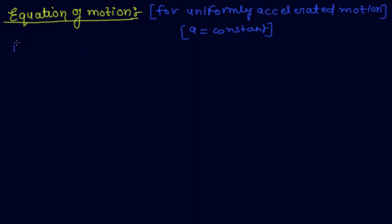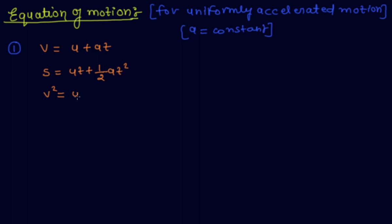The basic three equations of motion are: the first is V equal to U plus AT; the second is S equal to UT plus half AT squared; and the third is V squared equal to U squared plus 2AS.